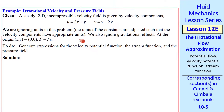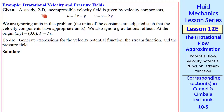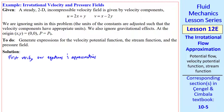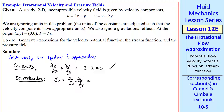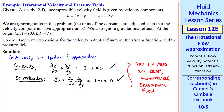Now let's do an example problem. We have two velocity components of a steady 2D incompressible velocity field. We're ignoring units and gravity, and we have one boundary condition at the origin where p equals p0. We need to generate expressions for the velocity potential function, the stream function, and the pressure field. First, let's verify our equations and approximations — continuity is valid and the irrotationality approximation is valid, so this is a valid 2D steady incompressible irrotational flow.